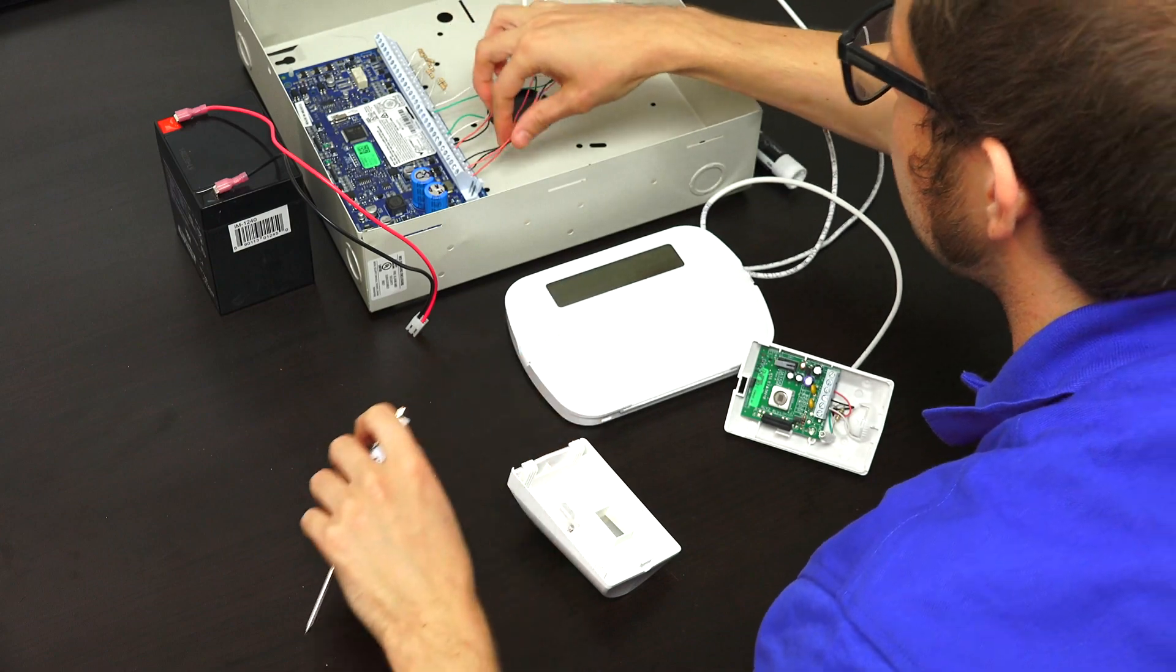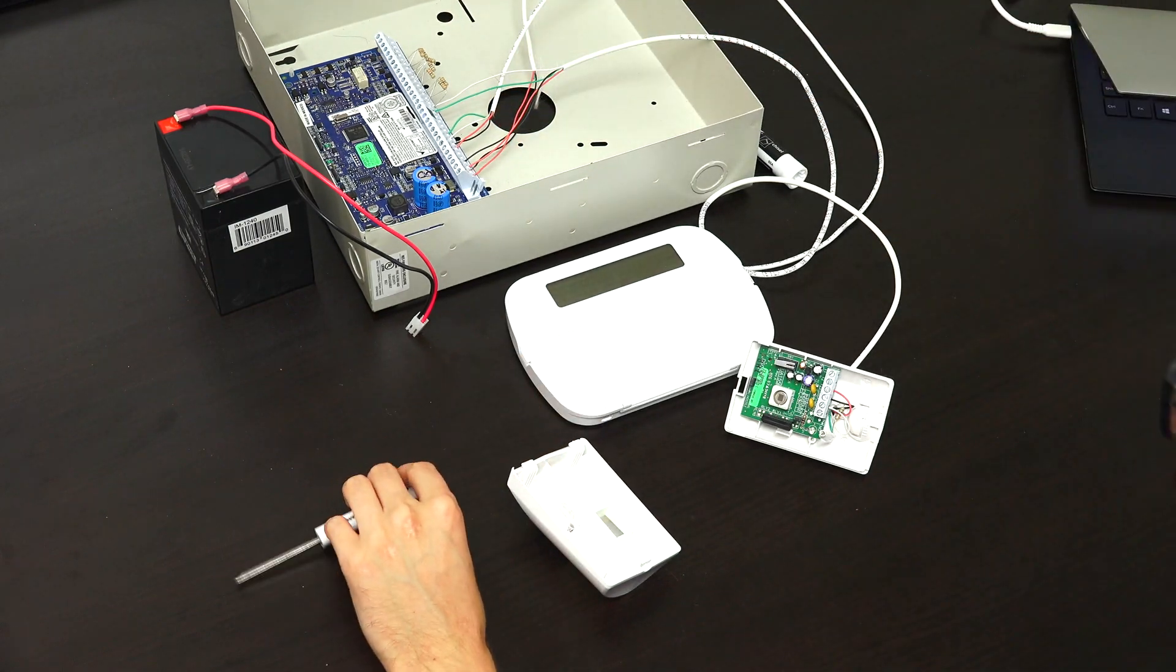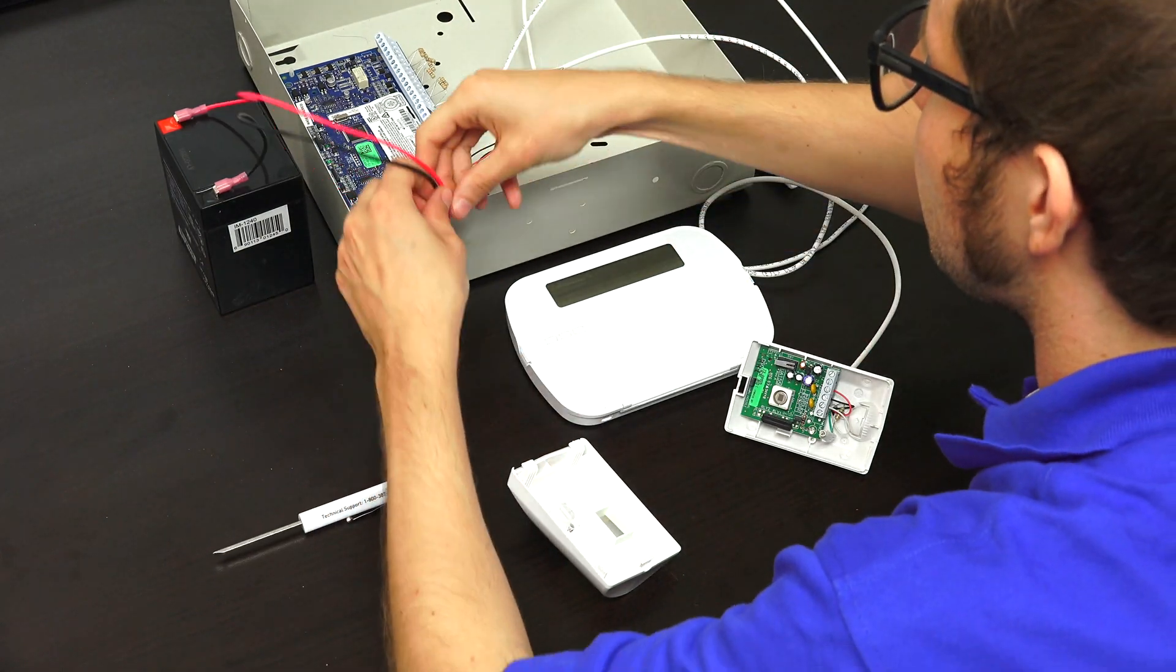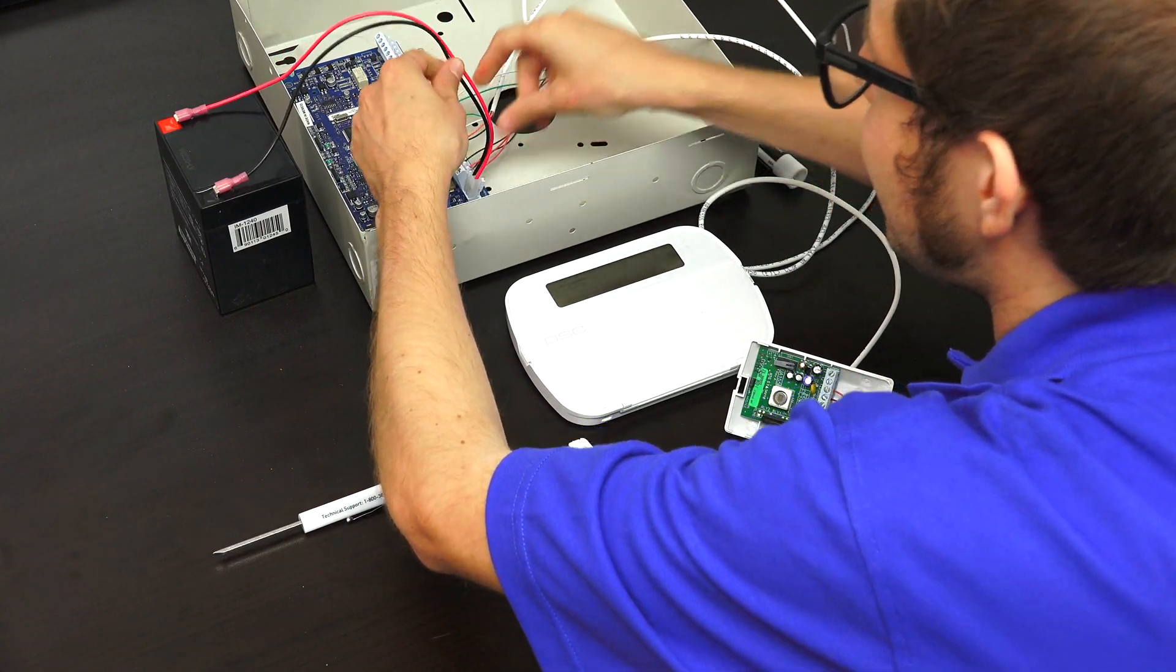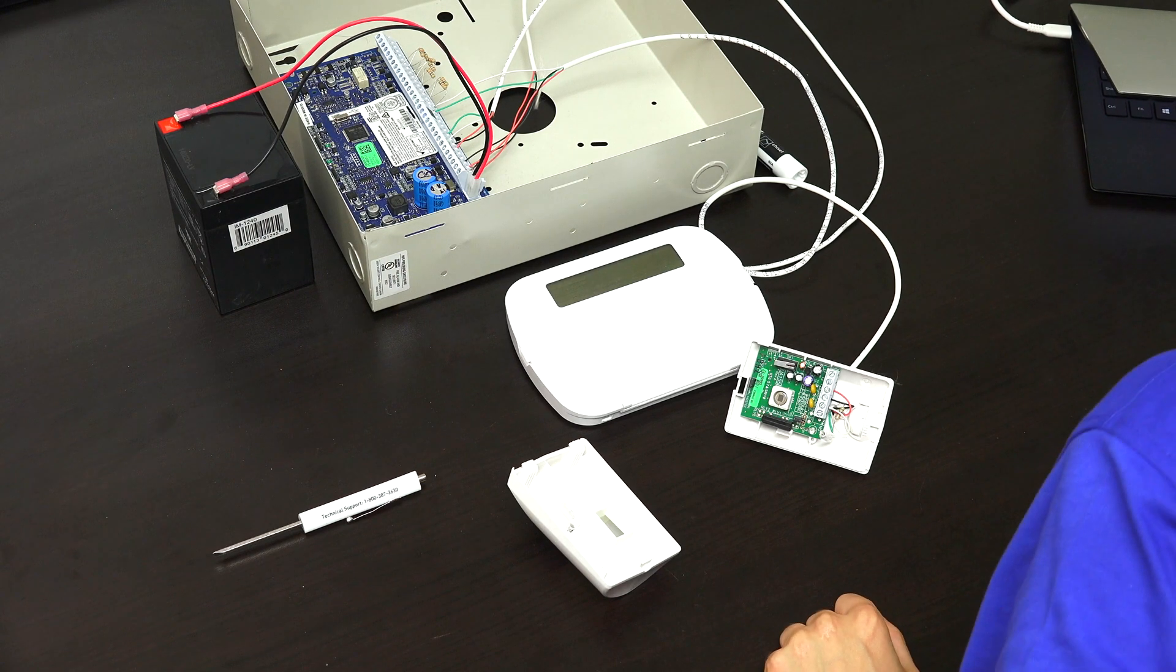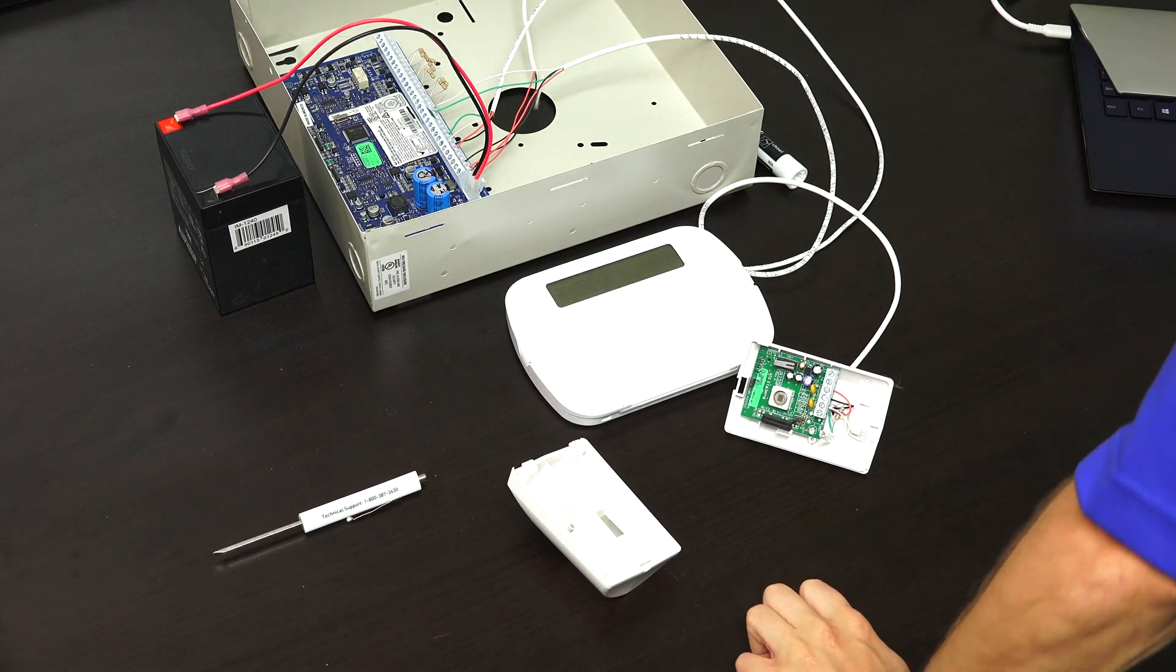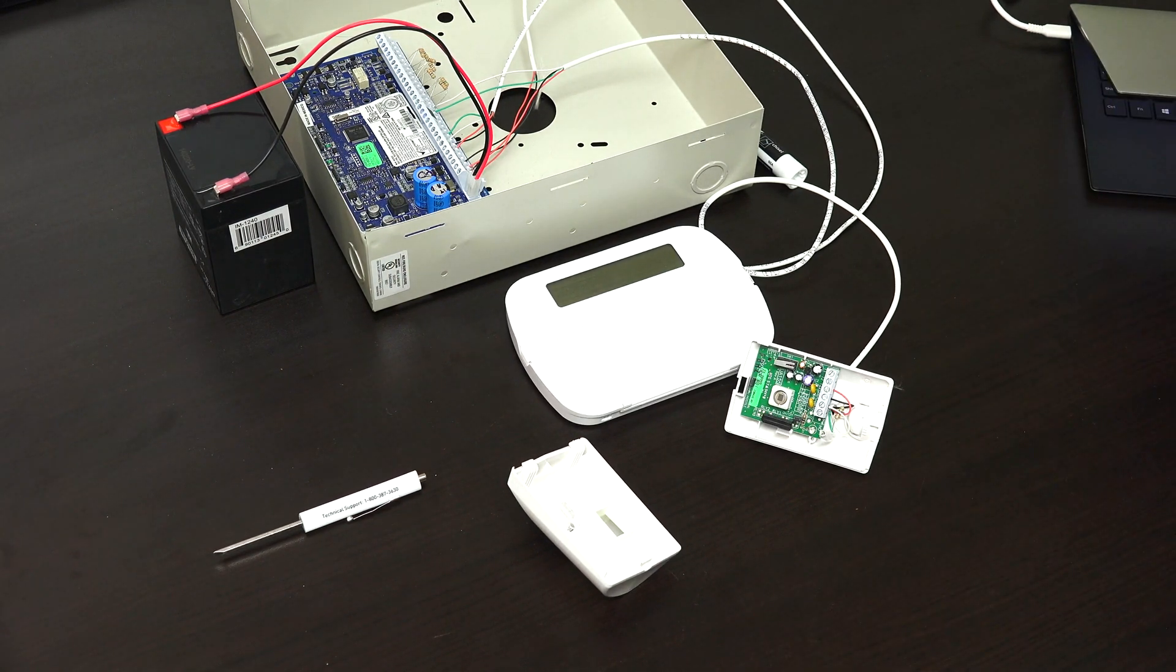And our sensor is nice and secure. All the connections are good. And so we're going to power up our Neo system. We're going to start with the backup battery. So we don't have any scary sparks this time. And there are still sparks, but what can you do? And then we're going to plug in the transformer to provide full power.